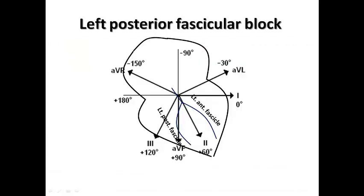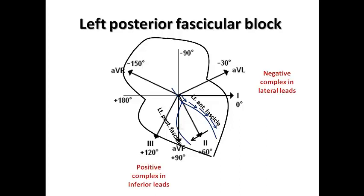Now let's discuss left posterior fascicular block. Here the block is in the left posterior fascicle rather than the anterior fascicle, and it is not in the whole left bundle branch. The electrical impulse drops down the anterior fascicle and then moves from anterior to posterior direction. We would therefore expect positive complexes in the inferior leads and negative complexes in lateral leads — the opposite of left anterior fascicular block.